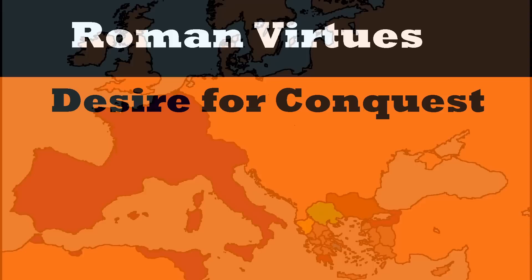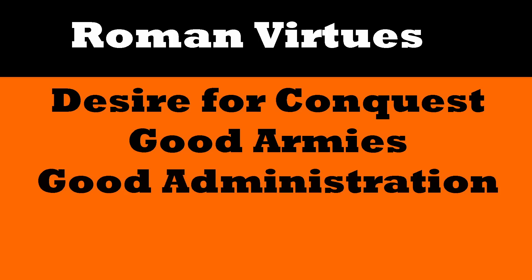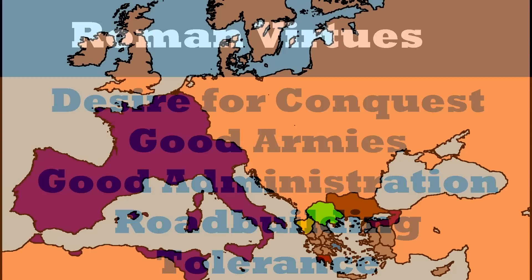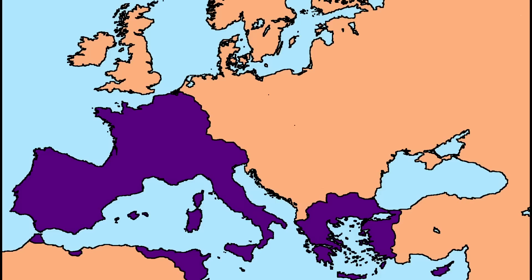Rome had a great desire for conquest fueled by their aristocrats, great and disciplined armies, good administrative talents, road building, and finally tolerance for the regions they conquered. When Rome conquered Greece they were incredibly impressed by Greek culture. Rome took on Greek art and science, adding these to the previously mentioned Roman traits, creating the Greco-Roman culture, which would spread throughout the Roman Empire.